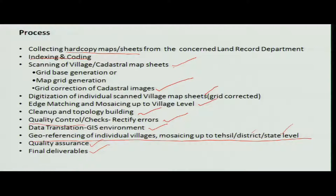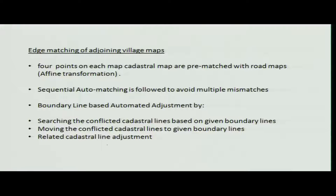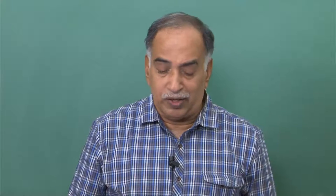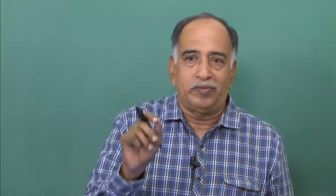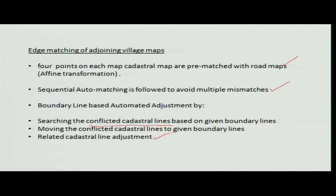Edge matching is a very difficult job. Previously, road maps could be used, or auto-matching to avoid multiple mismatches where boundary lines are adjusted automatically by searching for conflicting cadastral lines. There are many issues — line problems, or because of long-time usage there could be folding or dots that have appeared. Related cadastral lines need to be adjusted. These are the different edge matching techniques applied to village maps.